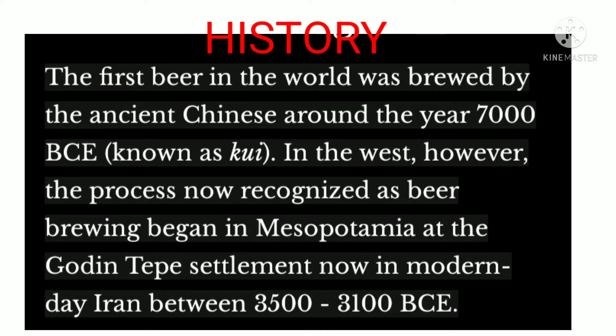Beer has been one of the most popular alcoholic beverages. It is believed that the first beer in the world was brewed by the ancient Chinese around the year 7000 BCE, which was popularly known as Kui. However, in the west, the process now recognized as beer brewing began in Mesopotamia at the Golden Tap settlement, now in modern day Iran, between 3500 to 3100 BCE.